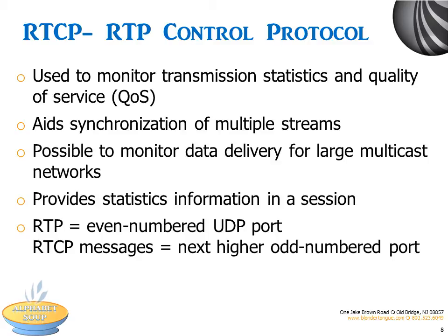An application may use this information to control quality of service parameters, perhaps by limiting flow or using a different codec. Typically, RTP will be sent on an even number UDP port, with RTCP messages being sent over the next higher odd number port.